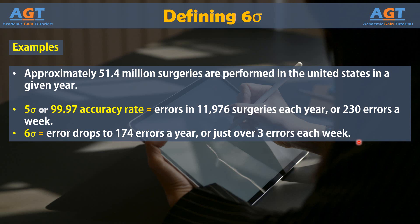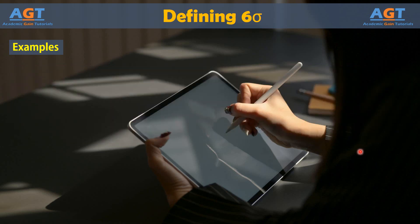For organizations, it's not just about the error rate — it's also about the costs associated with each error. Consider an example based on Amazon shipments. On Cyber Monday in 2013, Amazon processed a whopping 36.8 million orders. Let's assume that each order error costs the company an average of $35, which is a very conservative number, considering that costs might include return shipping, labor to answer customer phone calls or emails, and labor and shipping to fix the wrong order.